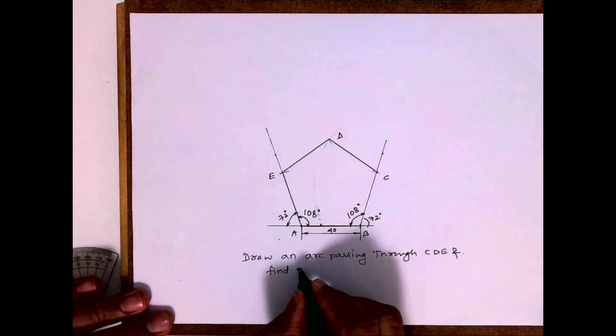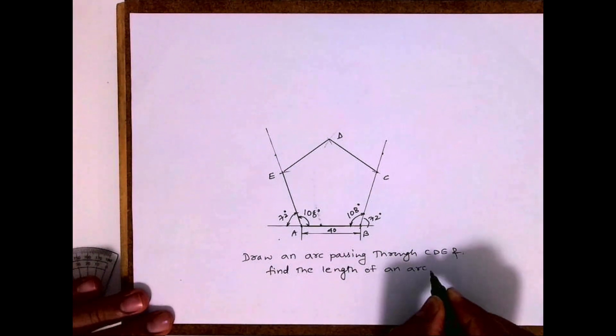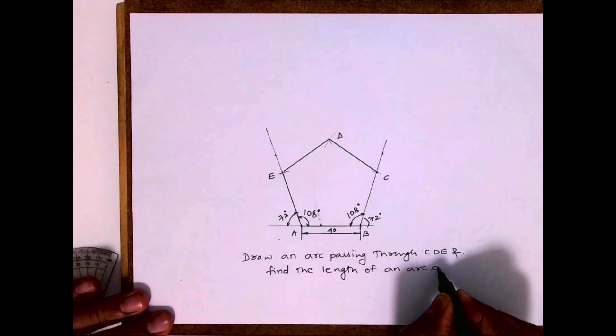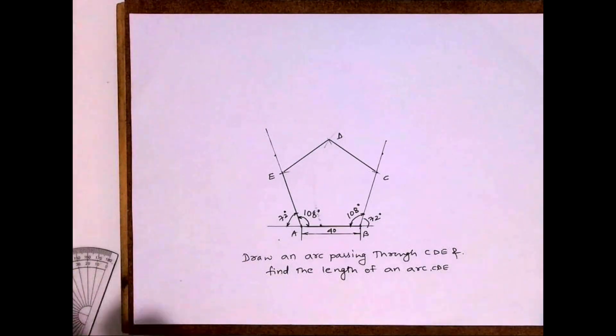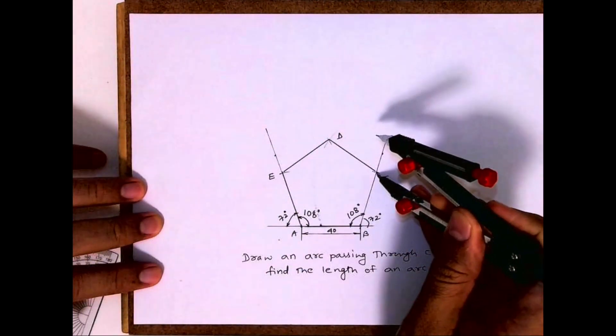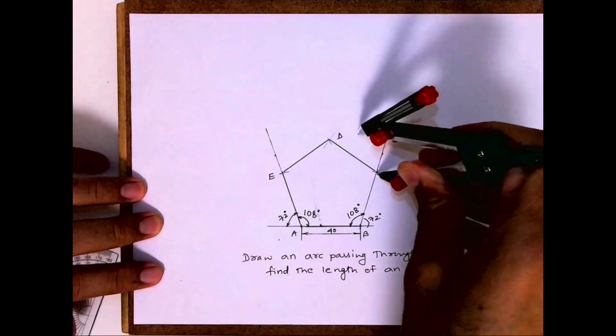And we need to find the length of arc CDE. So what we will do first, we will bisect CD.